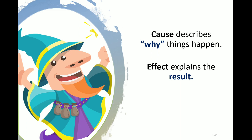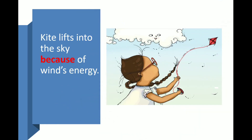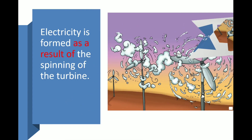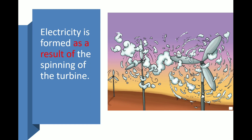Cause describes why things happen. Effect explains the result. Let's take a look at the examples. A kite lifts into the sky because of the wind's energy — the word 'because' signifies the reason. If turbines use wind energy, then electrical energy is formed — 'if' gives us a clue about the cause, while 'then' describes the effect. Electricity is formed as a result of the spinning of the turbine — 'as a result' is a signal phrase for the effect.